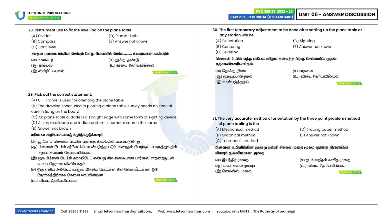Twenty-eighth question: What instrument is used to fix the leveling on a plane table? To level the plane table you use a split level, i.e., a level tube. Option C is the correct answer.